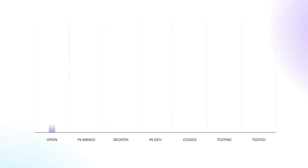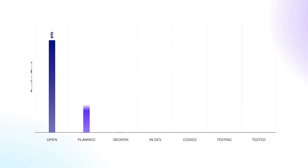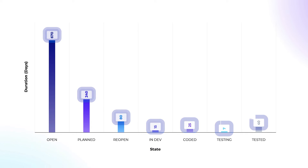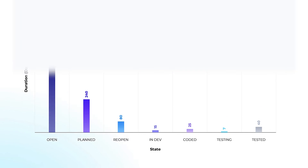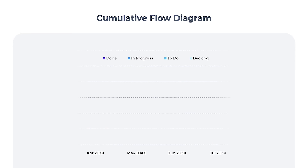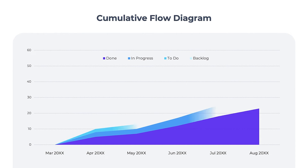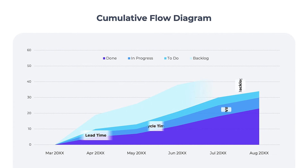For even more visualizations, use these graphs to plot out the amount of time spent in each phase of development. The number above each column represents the number of days involved. This cumulative flow diagram plots out every phase of development against each other.